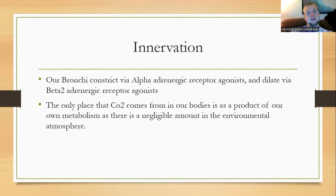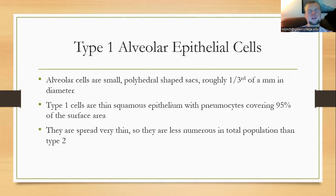When we breathe atmospheric air in, there is no significant carbon dioxide — it only comes from inside our bodies as a product of metabolism, so it is negligible in the environmental atmosphere. Our two types of alveolar epithelial cells: type 1 cells are very thin squamous epithelium covering about 95% of the surface area. They are spread very thin and are less numerous in total population than type 2, even though they cover 95% of the surface area.